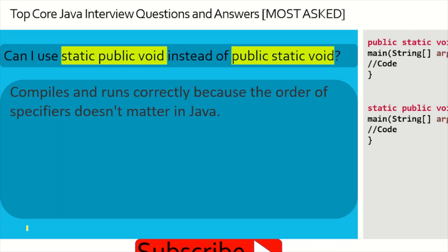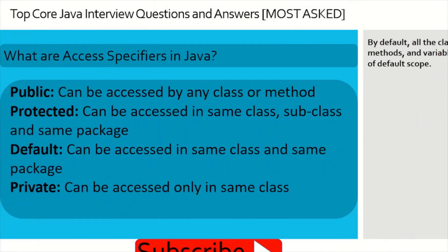A tricky question: can we use 'static public void' instead of 'public static void' for the main method? The answer is yes — the compiler will run completely fine because the order of specifiers like public, static, and void does not matter in Java. We can mention them in any order and it will work.